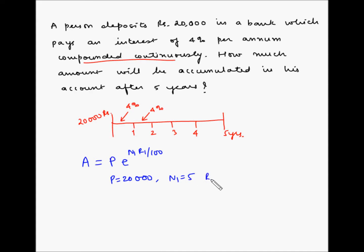So in this case, P is 20,000, n1 is 5 years, and r1 is 4. So A is equal to 20,000 multiplied by E, and E is a constant which is equal to 2.71828, to the power of n1 × r1, which is 5 × 4, which is 20, divided by 100.